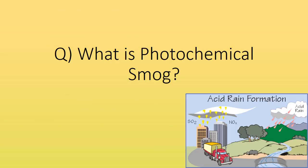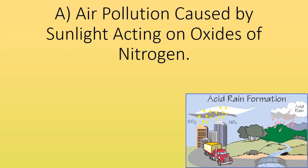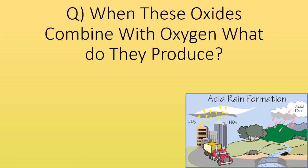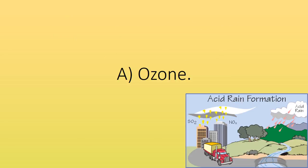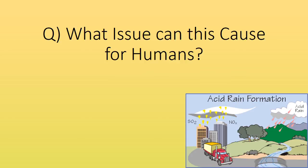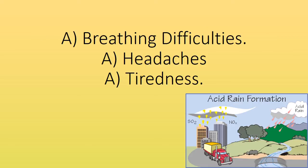What is photochemical smog? Air pollution caused by sunlight acting on oxides of nitrogen. When these oxides combine with oxygen, what do they produce? What issue can this cause for humans? Breathing difficulties, headaches, and tiredness.